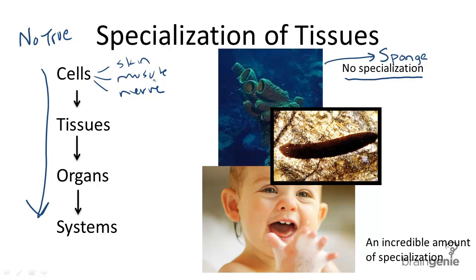In addition to lacking specialized cells, sponges also have no true tissue, because these unspecialized cells do not link together in one working functional form.